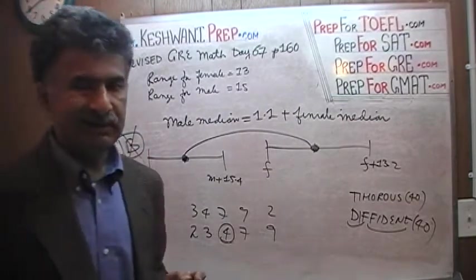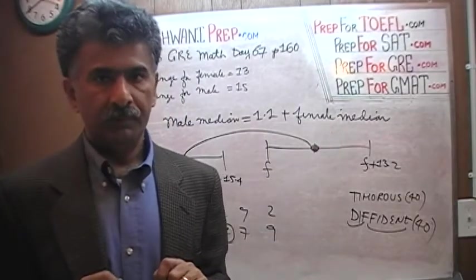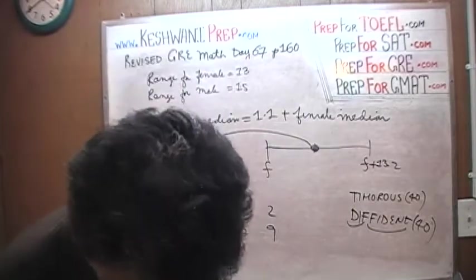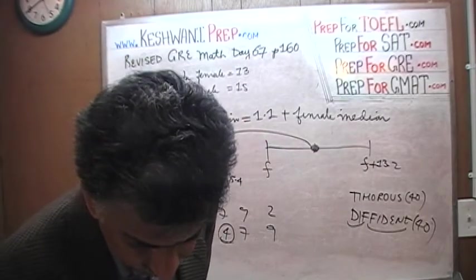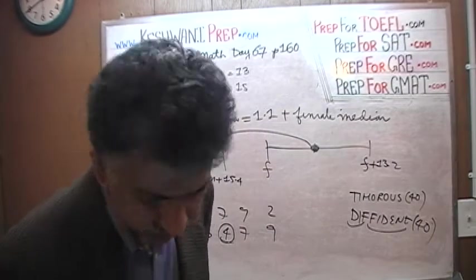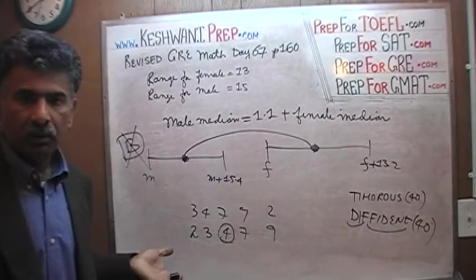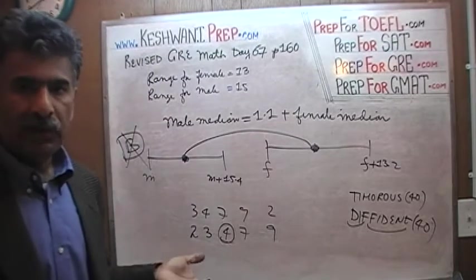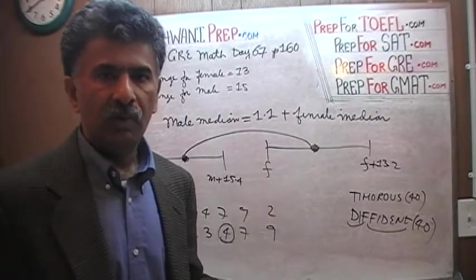The second statement is worthless. Medians do not tell us anything at all about the spread, neither does the average, which is the third statement. It says the average height of the male students in the class is 4.6 greater than the average height of the female students. Again, it's not going to help us. Knowing the average of a group tells us nothing at all about the range.